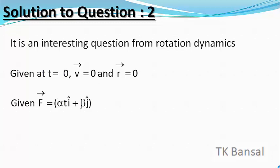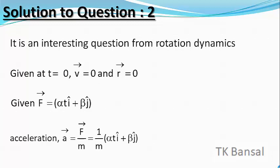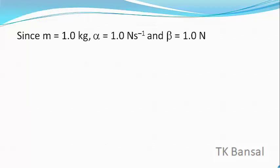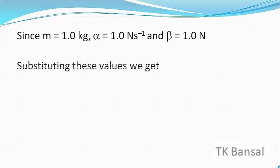Acceleration A vector = F vector / m = (1/m)(alpha·T î + beta ĵ). Since m = 1.0 kg, alpha = 1.0 N·s⁻¹ and beta = 1.0 N, substituting the values we get A vector = T î + ĵ.